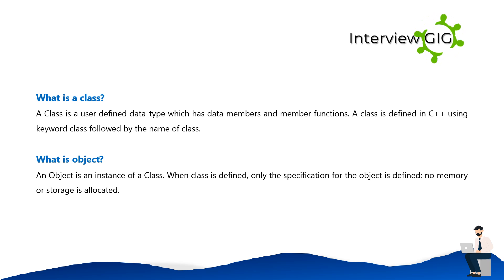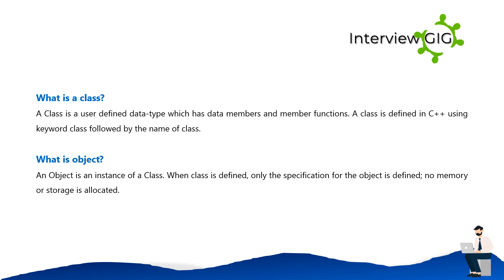What is a class? A class is a user-defined data type which has data members and member functions. A class is defined in C++ using the keyword class followed by the name of the class. What is an object? An object is an instance of a class. When a class is defined, only the specification for the object is defined; no memory or storage is allocated.